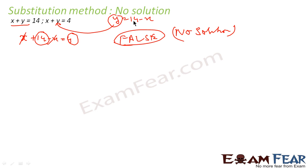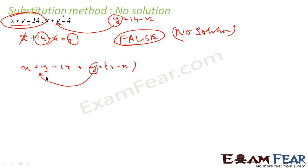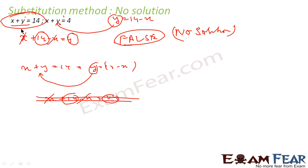Please make a note: do not use the same equation twice. If you use the same equation both times — for example, finding y equal to 14 minus x from equation 1 and then substituting back into equation 1 — you get x plus 14 minus x equals 14, which gives 14 equals 14, a true statement. That would incorrectly suggest infinite solutions. Always substitute the expression into the other equation, not the same one.